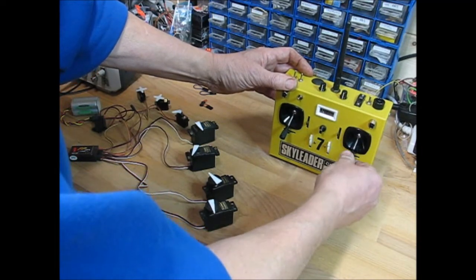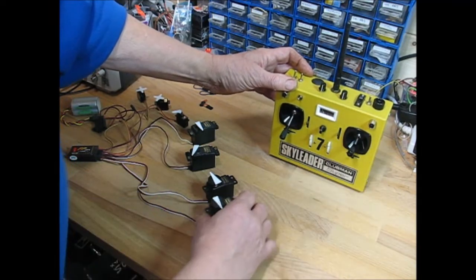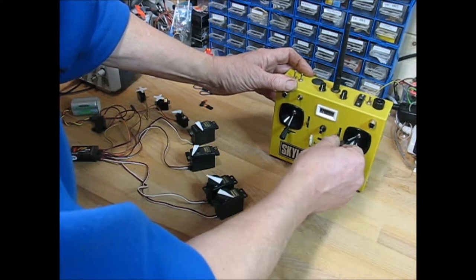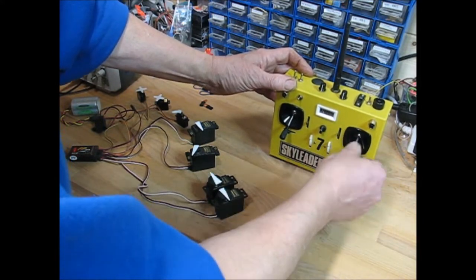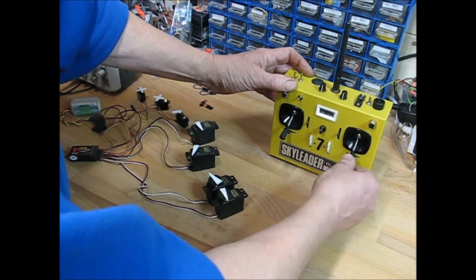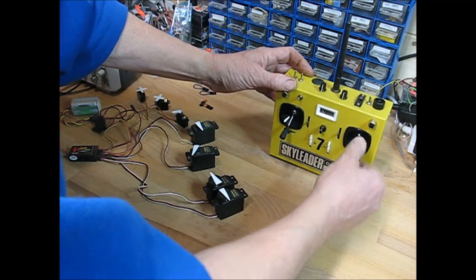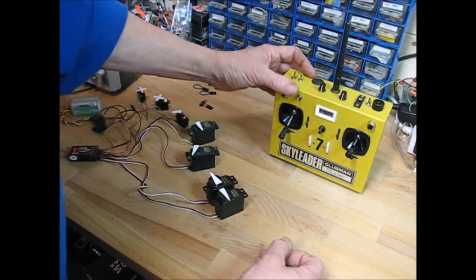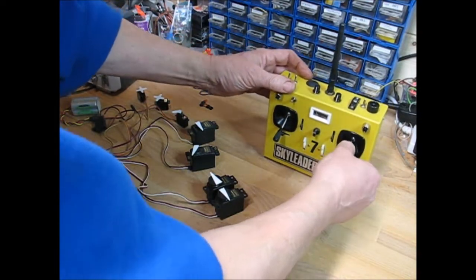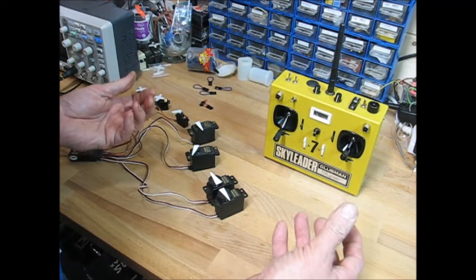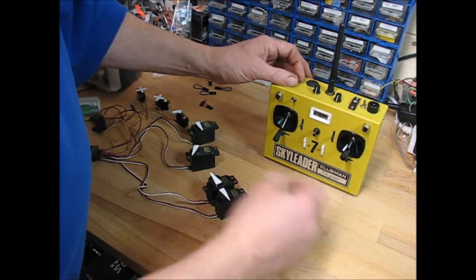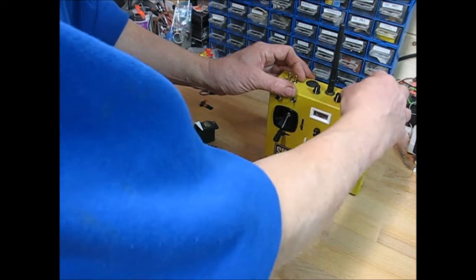This is the flying wing mixer where we've got very little elevator movement compared to a lot of aileron movements. That's 75-25 mix. Contrary to what you would think, it's the elevator servos that move in opposition on a flying wing not the aileron servos. They're mounted in opposition mirror image. So that gives you a reversal between the two. So that's that one.